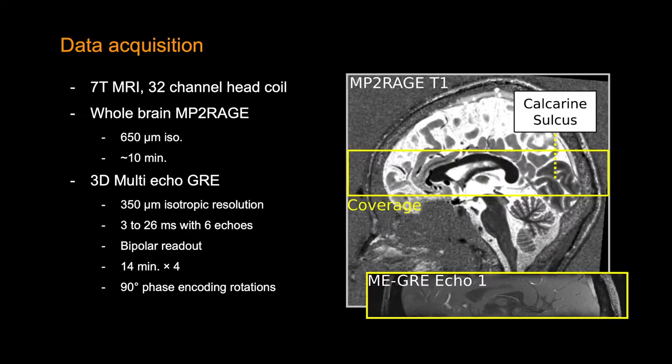In this project, we acquired data from three subjects using 7T MRI at Maastricht University. First, we acquired MP2-RAGE images for the whole brain, and then we acquired 3D multi-echo GRE images. These images were at 350 micron isotropic resolution. We acquired 6 echoes using bipolar readout, and we acquired 4 of these runs to increase our SNR by averaging in the post-processing stage.